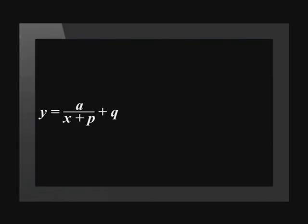This brings us to the new standard formula for a hyperbolic function: y = a/(x + p) + q. The new standard form has an extra variable, p. We have already seen that this value will move the function to the right if it is negative. We can assume then that if p is positive, the function will move to the left.